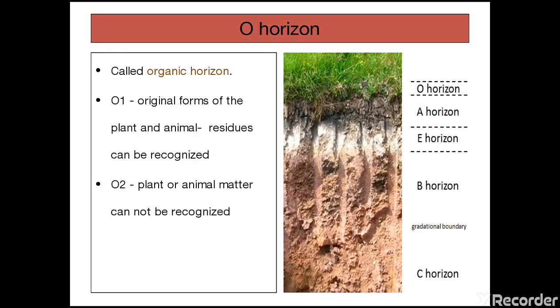First we are going to deal with O horizons. This O horizon is called organic horizon and it is divided into two types namely O1 and O2. In case of O1, all the dead plant and animal and leaf litter, which are visible parts that can be recognized, form the O1 horizon. In case of O2 horizon it cannot be recognized because it is decomposed product.